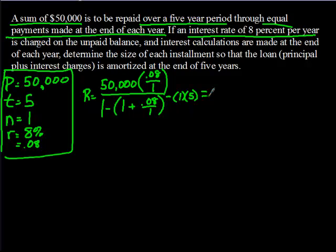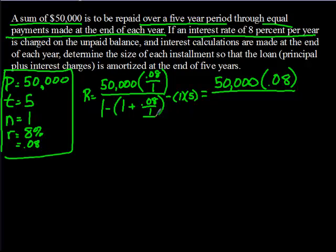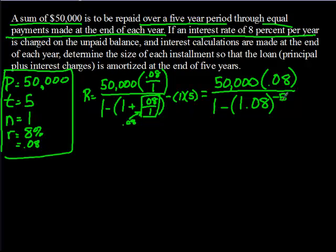First, we get rid of the fractions. Since 0.08 divided by 1 is 0.08, the numerator becomes 50,000 times 0.08. In the denominator, 1 plus 0.08 gives us 1.08, and negative 1 times 5 is negative 5. So we have 50,000 times 0.08 divided by the quantity 1 minus 1.08 to the negative 5 power.